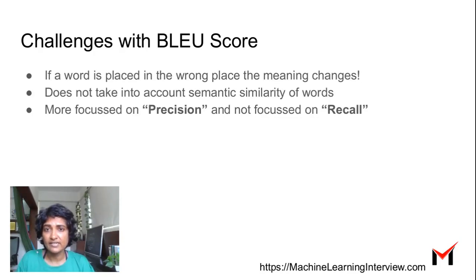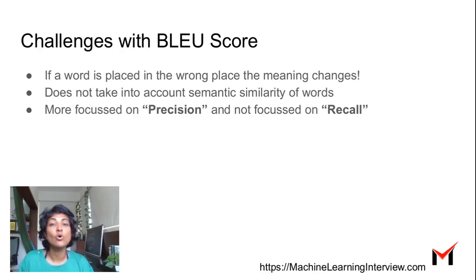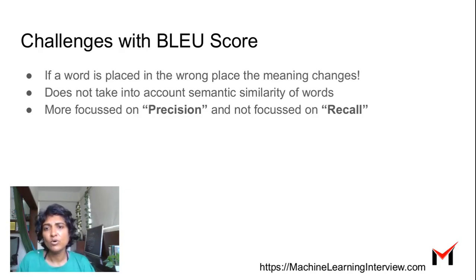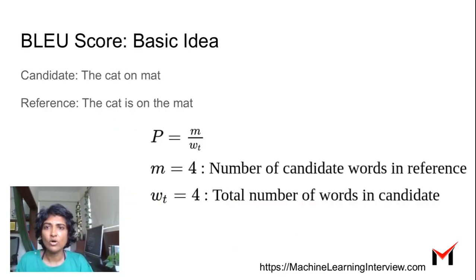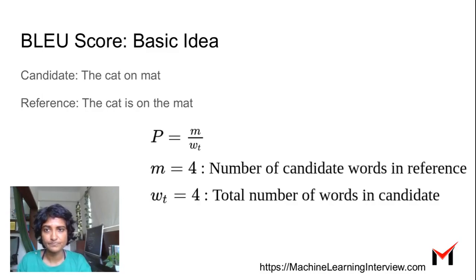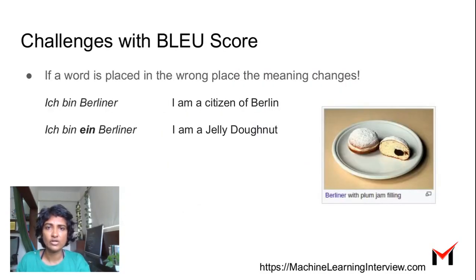Other challenges are that BLEU score does not take into account semantic similarity of words. For instance, if instead of saying 'the cat is on the mat' you say 'the cat is over the mat', they are pretty similar, but BLEU score cannot handle the fact that 'on' and 'over' are quite similar. It is also more focused on precision and not focused on recall — in the first example 'the cat on mat', every word in the candidate is in the reference giving a perfect BLEU score, but there are words in the reference not in the candidate, and BLEU score does not account for that.